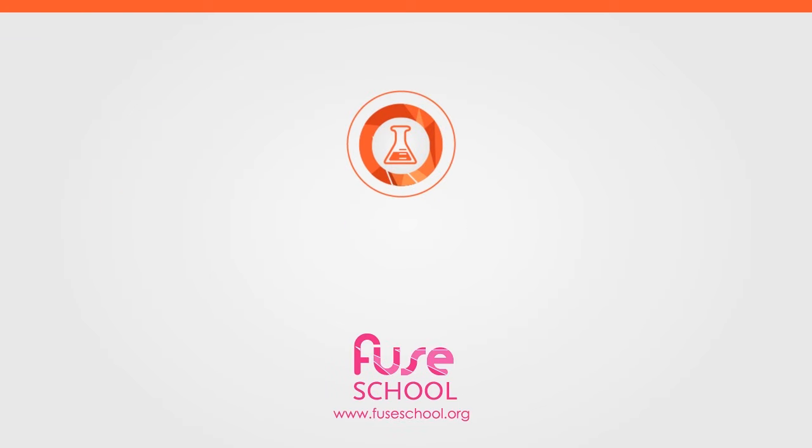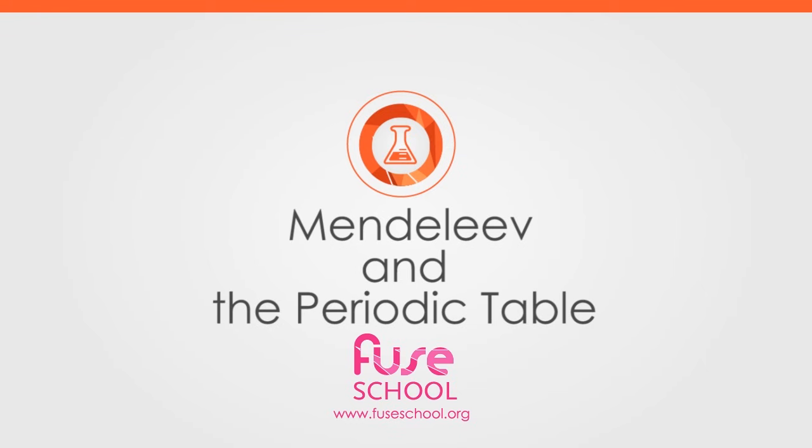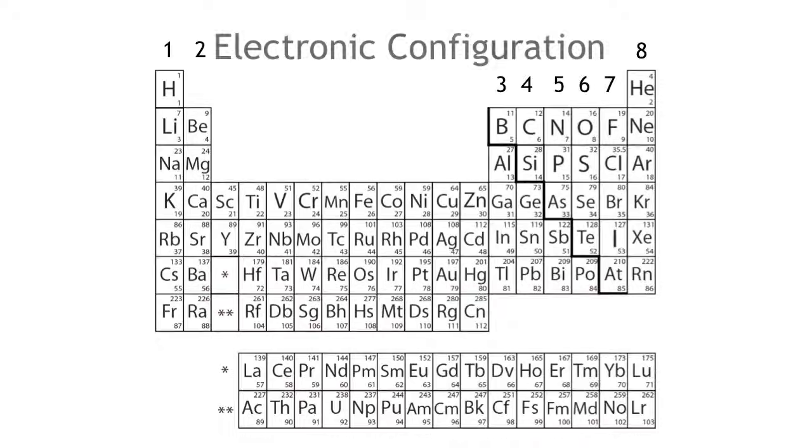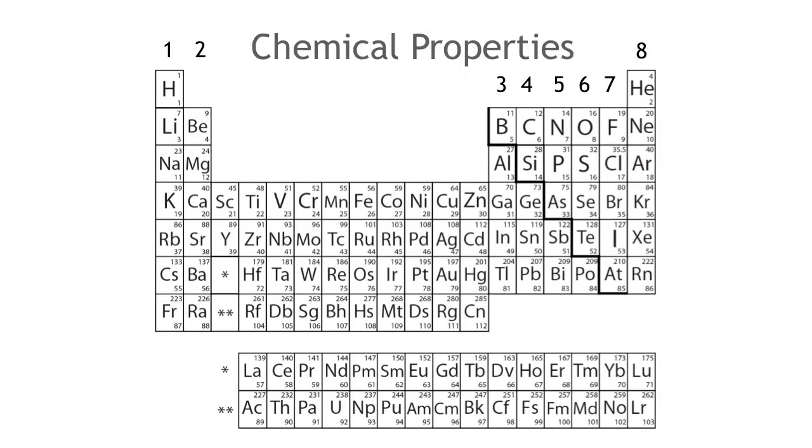The periodic table is a table that organizes the elements by their atomic number, electronic configuration, and chemical properties.